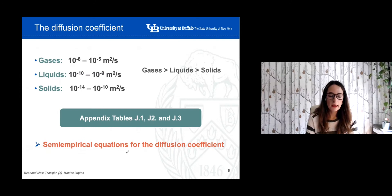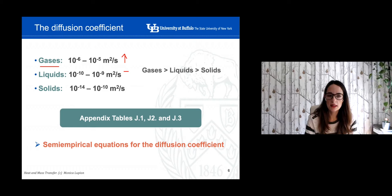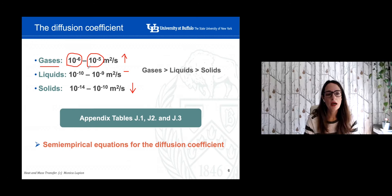Very quickly, just to give you a sense of scale — and I think we discussed this in a previous lecture. In the case of gases, the diffusion coefficient is usually higher than in liquids, and especially higher than in solids. In gases, you will typically have a value in the range of 10⁻⁶ to 10⁻⁵. For liquids it is lower than that, and for solids the diffusion coefficient is very, very small.